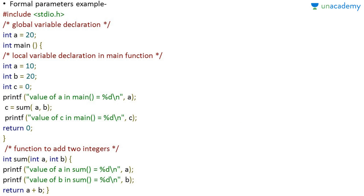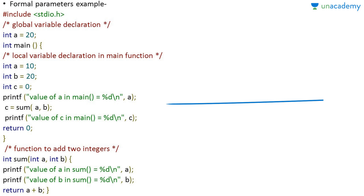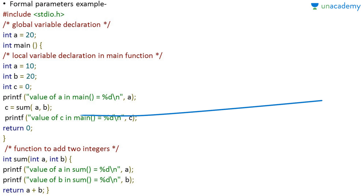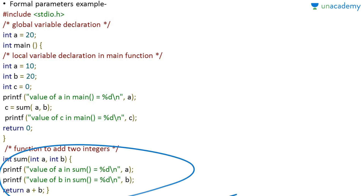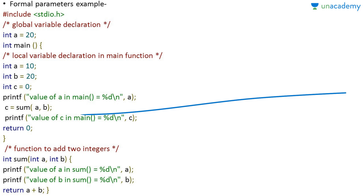In the formal parameter example, we initialize a, b, and c with values 10, 20, and 0 respectively. In the main block, the value of a is 10, so it will be printed as 10. Then c is assigned the result of calling the function sum(a, b). Here we are writing a function to add two integers, and the parameters present in the function definition are called formal parameters.